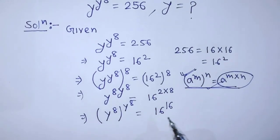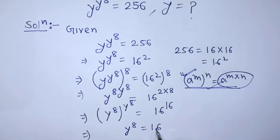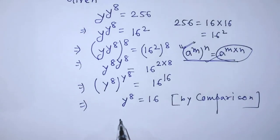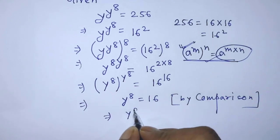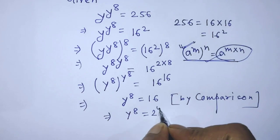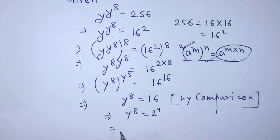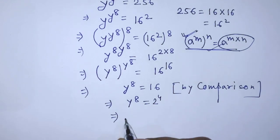Now we have to compare the left hand side and right hand side of this equation. After comparing both sides, we get y to the power 8 is equal to 16, which is 2 to the power 4. Again we have to take power 1 over 8 on both sides of this equation.